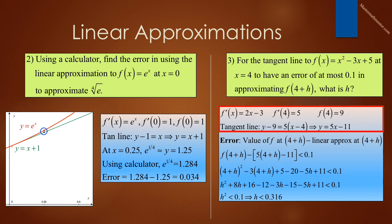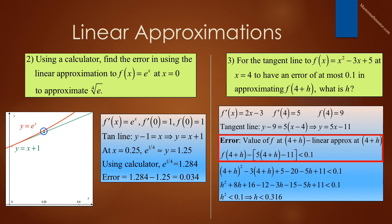So, let's find the tangent line to f of x equals x squared minus 3x plus 5 at x is equal to 4. We know that f prime of x equals 2x minus 3, and f prime of 4 is equal to 5, and f of 4 is 9. So, our tangent line is y minus 9 is equal to 5, quantity x minus 4, and y equals 5x minus 11.